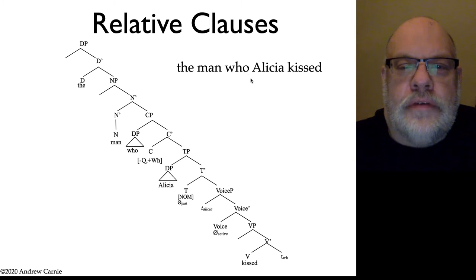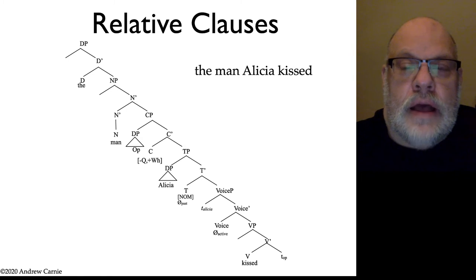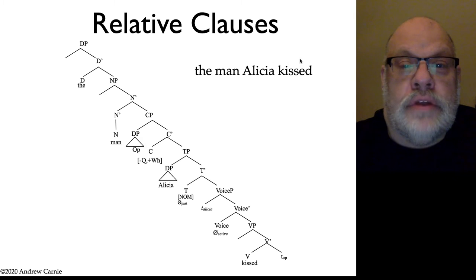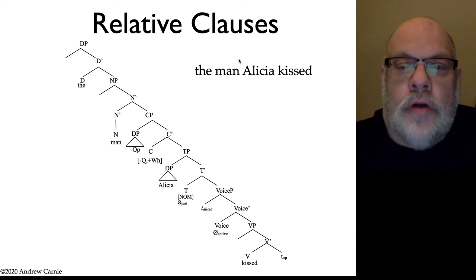We also find cases like 'the man Alicia kissed,' where the man is being modified by what we call a bare relative clause or a reduced relative clause, because there is no overt question word.